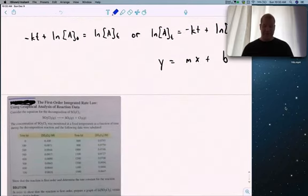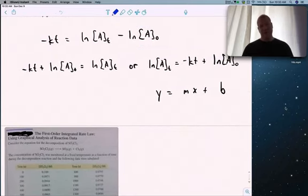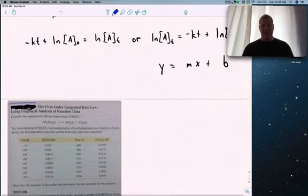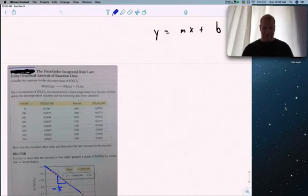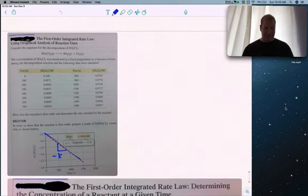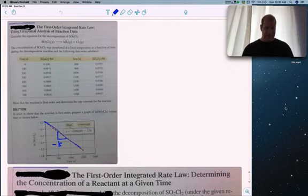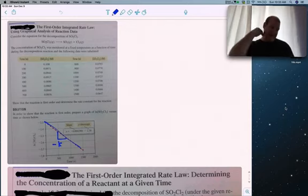This predates computers. Back when we didn't have fancy tools, we graphed things. If you have concentration time data, you can take the natural log of concentration versus time, and if it's a straight line, it's first order.